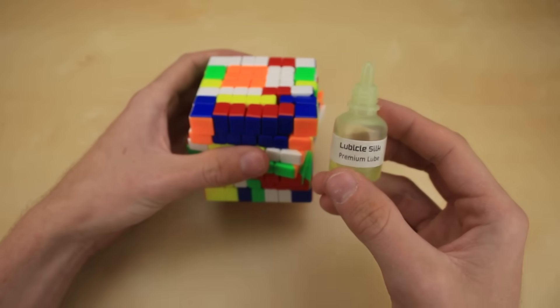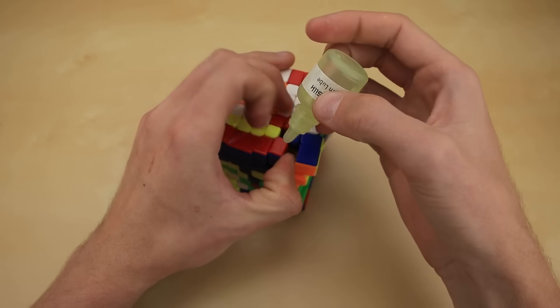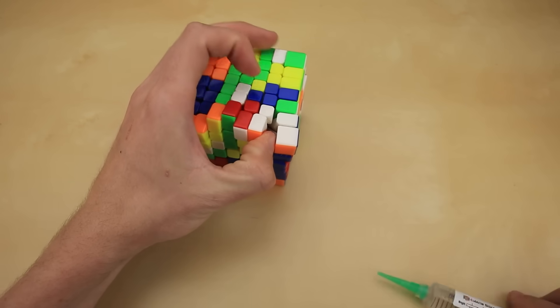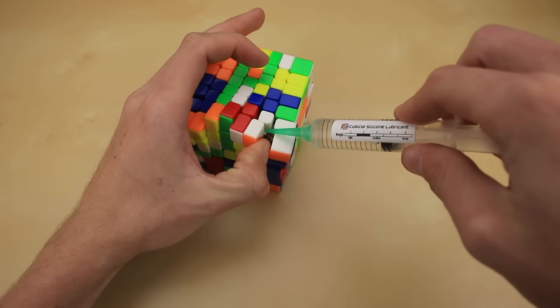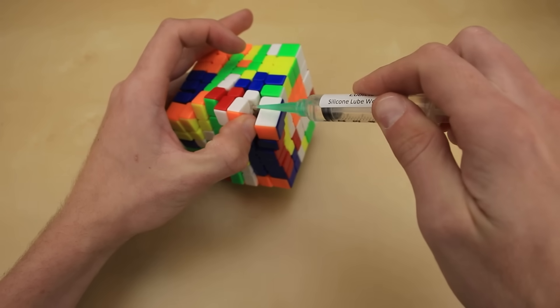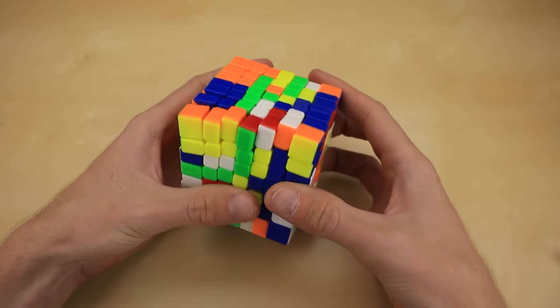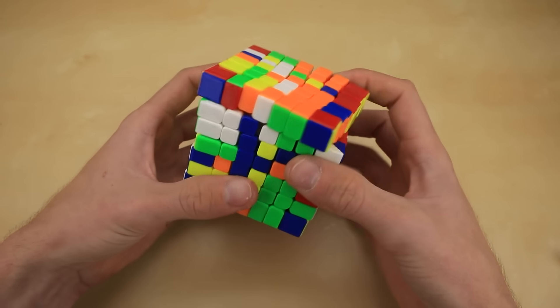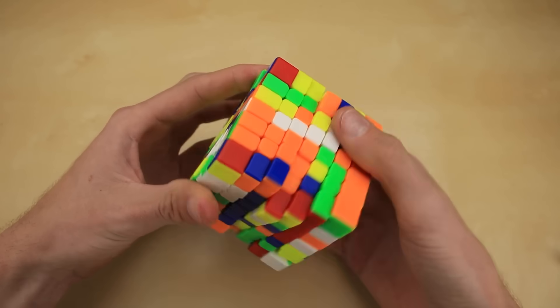So how about Lubical Silk? I still got my original bottle. This should make the cube nice and smooth. Let's add a few drops in there. And this is going to take too long if I do them all separately, so let's also add a bit of Cubicle weight two, as well as some weight four. That'll also make the cube nice and smooth. Just put a whole bunch in there. Let's break it in. I'm expecting this to make the cube feel a little bit more sluggish, but also nice and smooth, and it feels like that is indeed what is happening.